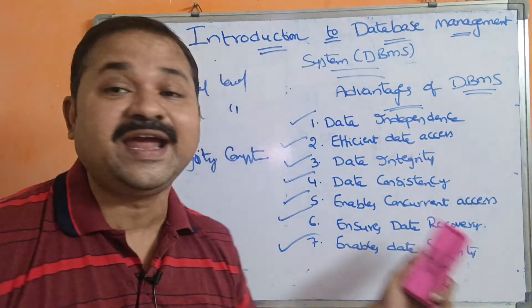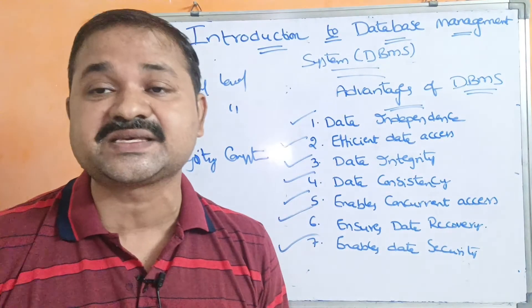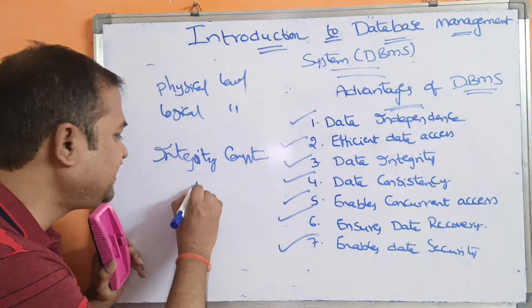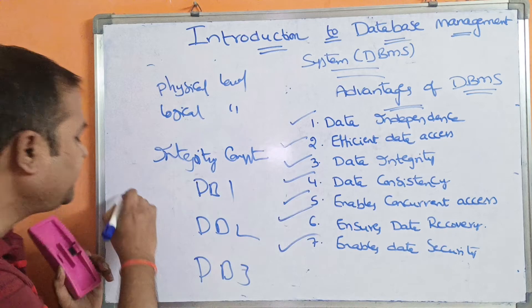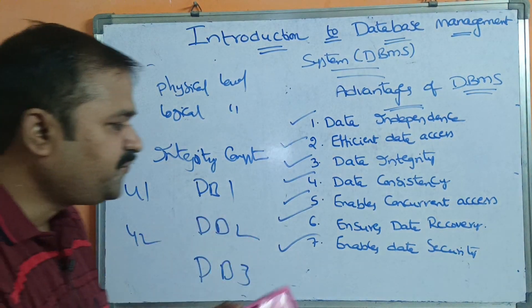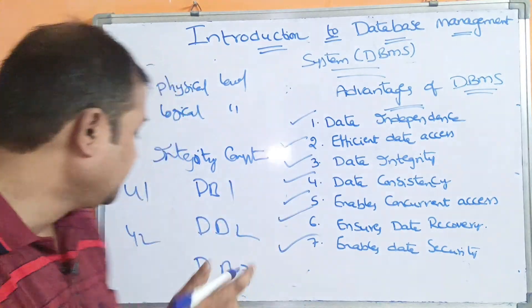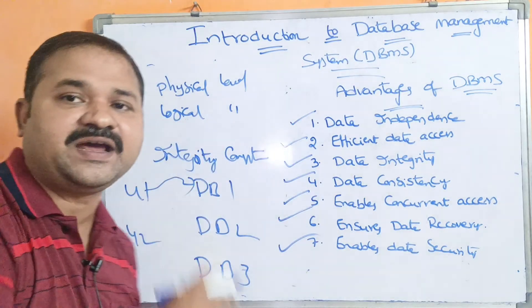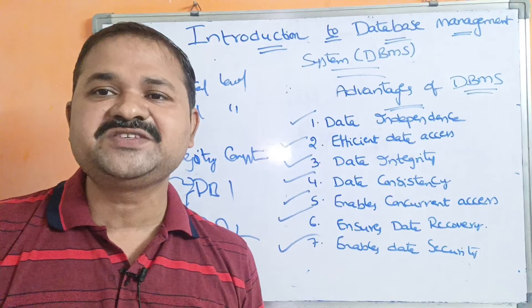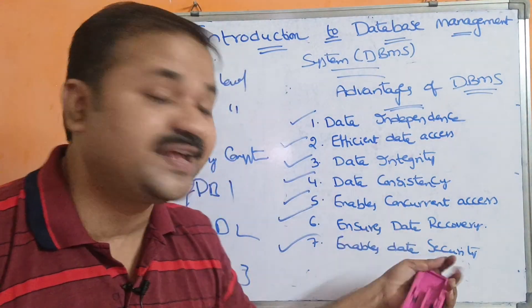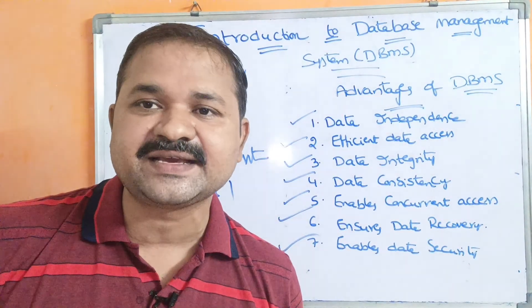The last advantage is enabling data security. For example, if we have three databases and two users, we can enforce security rules: user one can access only database one, whereas user two can access all three databases. We can enforce who can access which data. This concludes the introduction to database management systems.